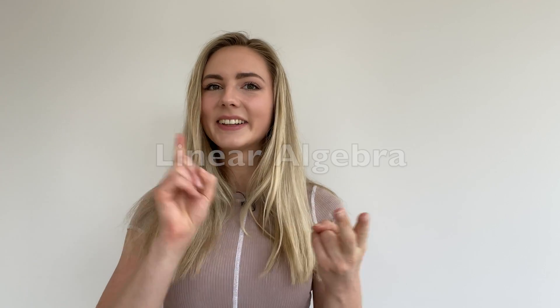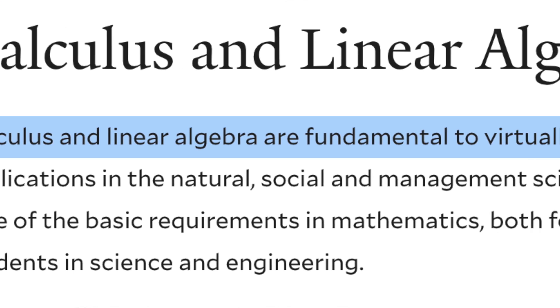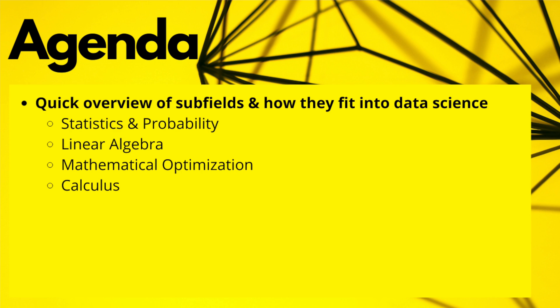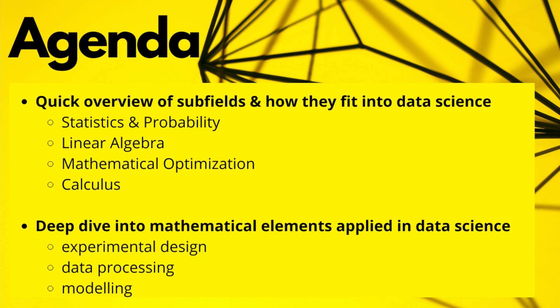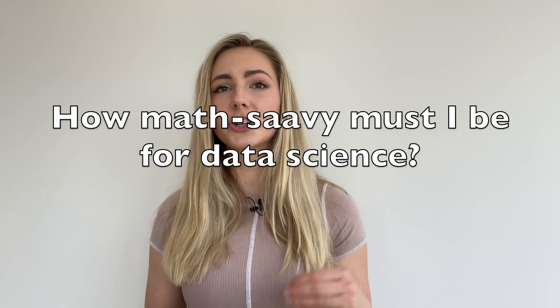The main four branches of math you'll encounter within data science are statistics and probability, linear algebra, mathematical optimization, and calculus. Now two of these subfields, linear algebra and calculus, form the foundations for many other mathematical subfields, including the other two that are used in data science: stats and optimization. I'll be starting with a quick overview of each of the four subfields and their roles in data science, then getting into a concrete overview of which aspects are used day to day as a data scientist, and how math savvy you really need to be on a scale of zero to hero.